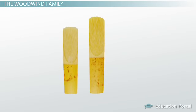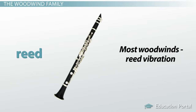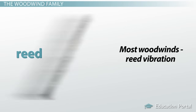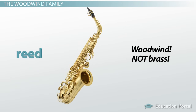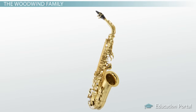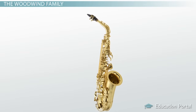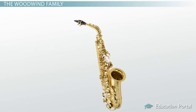Most woodwind instruments use a small piece of wood called a reed to produce their vibration. The reed vibrates when air is blown across it — this is how instruments like the clarinet work. Saxophones also use a reed, which is why they are classified as a woodwind and not a brass instrument.